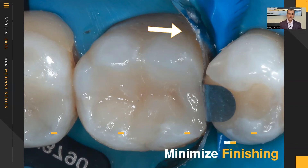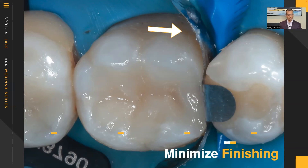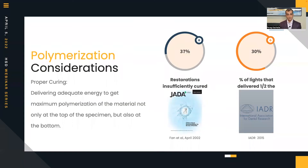After removing the matrix, I cure buccolingually. I also place a glycerin gel — like KY jelly — around all my margins and cure through that, which removes the oxygen inhibitor layer and allows the surface to cure more densely. I like to put that gel across all the teeth for my final cure. Polymerization is one of those things that doesn't get enough attention — it's probably one of the most important aspects of achieving predictability.